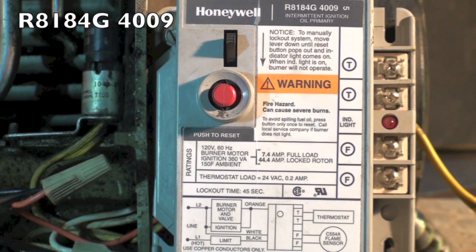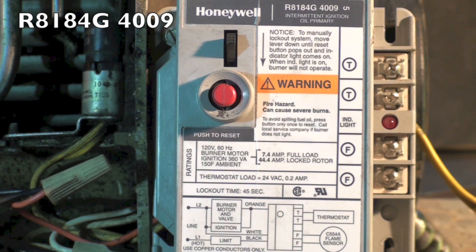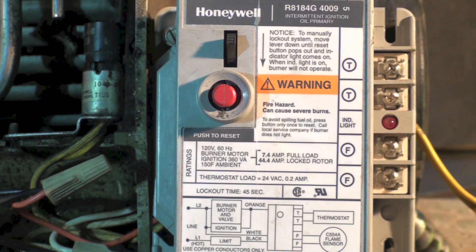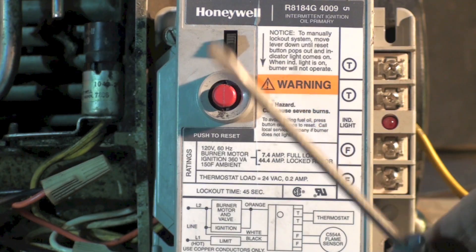I'll show you this with a White Rogers control in a minute, but this one here is a Honeywell 8184G 4009. It's almost as simple as the older ones. The only difference is it has this little doohickey to lock the system out if you need to. So that's the control we're using. Now let's look inside.